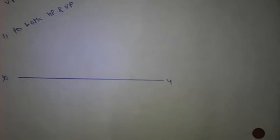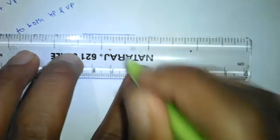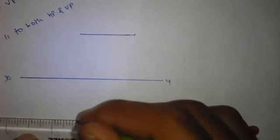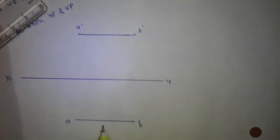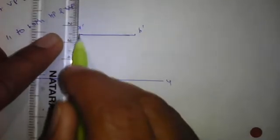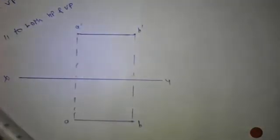Next condition: parallel to both HP and VP. When it is parallel to both, we will see the true shape in the front view as well as in the top view, so we can draw either view first. We draw both views, these are the top views and these are the front views, and we draw the projectors. We are seeing the true shape in both cases — in the front view as well as in the top view.